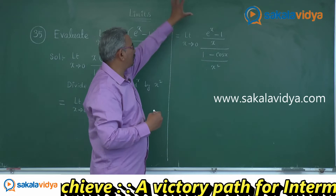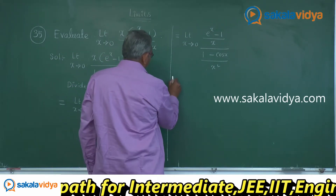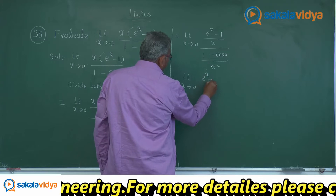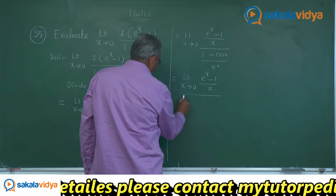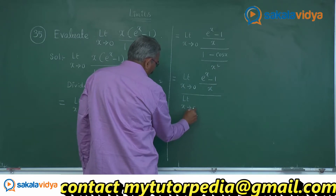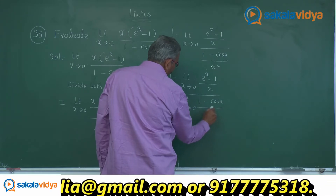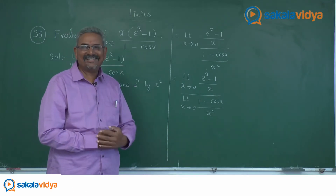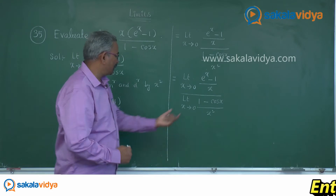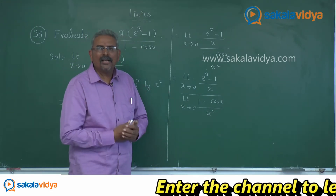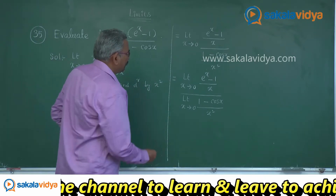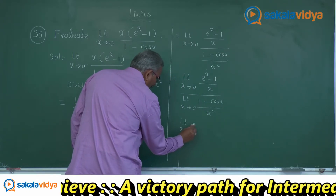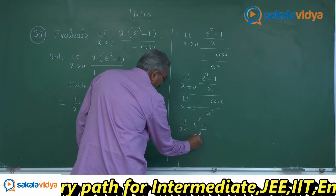Now the limit is applied to the numerator as well as the denominator separately. This can be written as: limit x tends to 0 of e power x minus 1 by x, divided by limit x tends to 0 of 1 minus cos x by x square. The numerator is a standard result — limit x tends to 0 of e power x minus 1 by x equals 1.